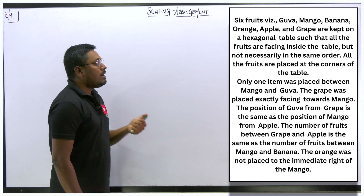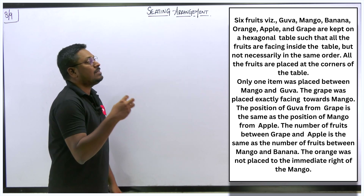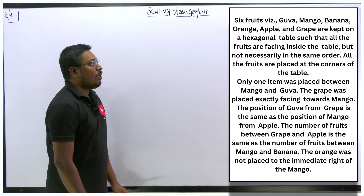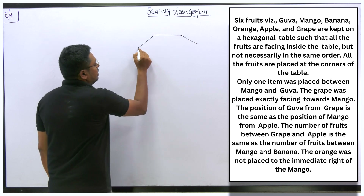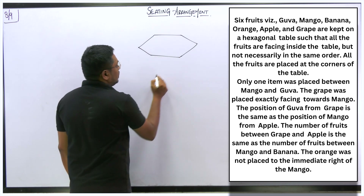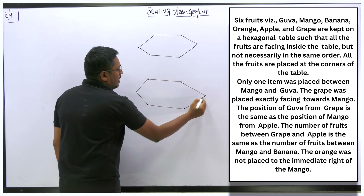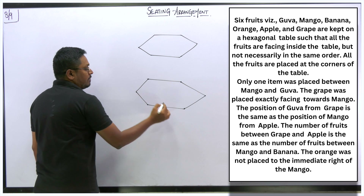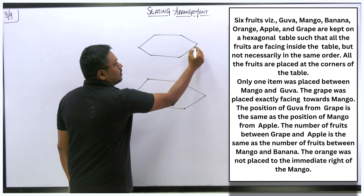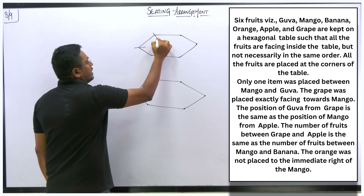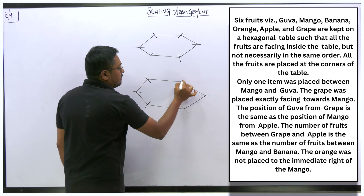Here is the set number 8 seating arrangement. Six fruits are kept on a hexagonal table such that fruits are facing the center — facing inside the table — but not necessarily in the same order. All the fruits are placed at the corners of the table. That is most important. We can draw two diagrams in case we get any possibilities. In a hexagon shape, 6 points are there, and either the fruits can be placed at the middle of the sides or at the corners. According to this question, the fruits are placed at the corners.